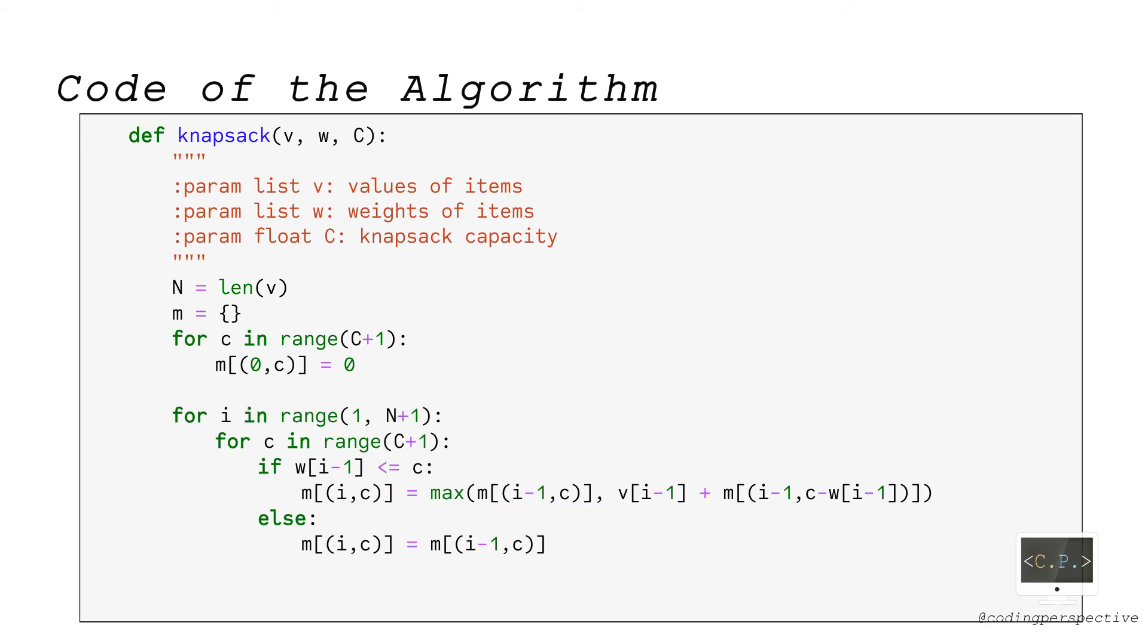In the second step, we have a nested loop. In the outer loop, we iterate over each i from 1 to capital N, whereas we iterate over each c from the inner loop.